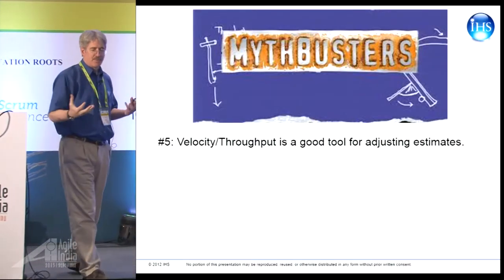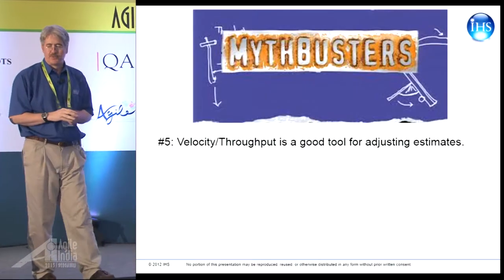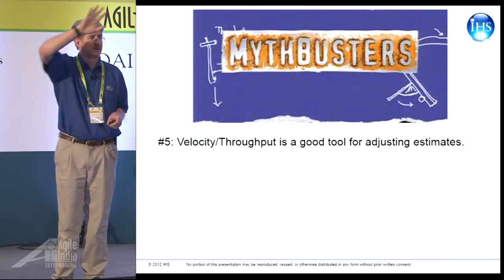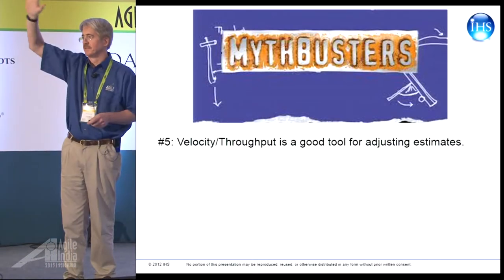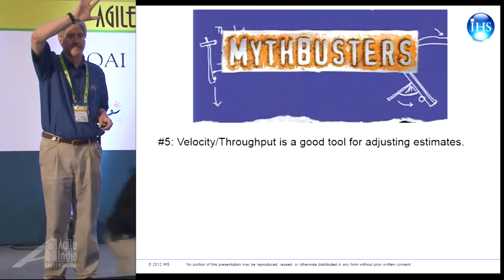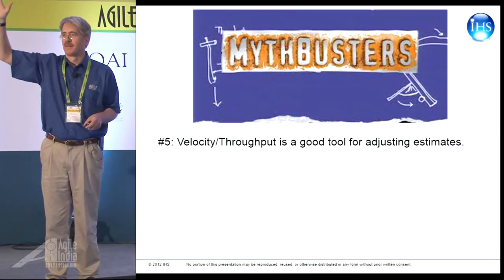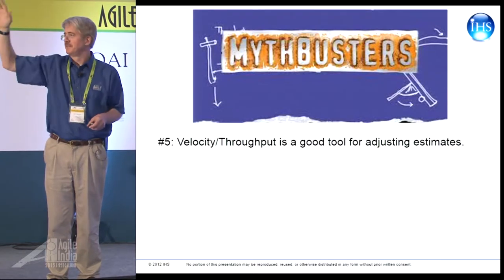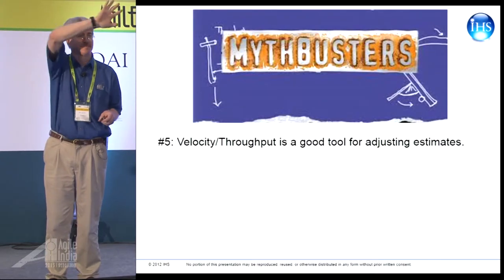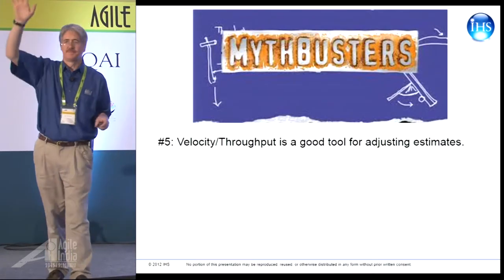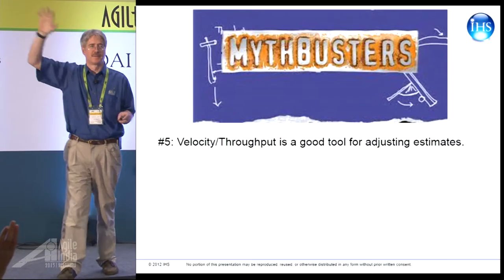Myth five: velocity or throughput are good tools for adjusting estimates. Think that's a good idea? Confirmed? Busted? Plausible?